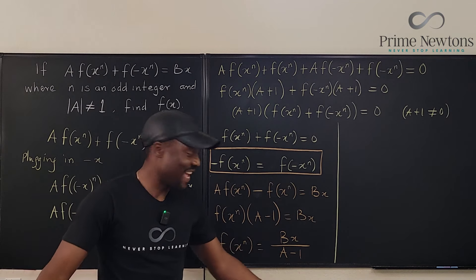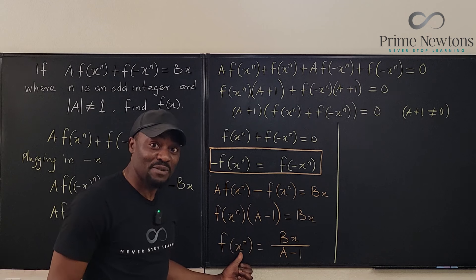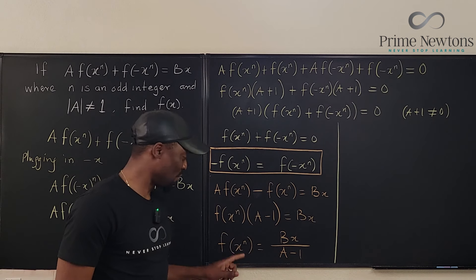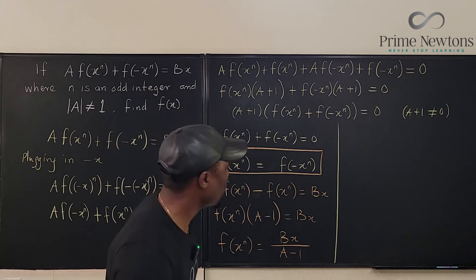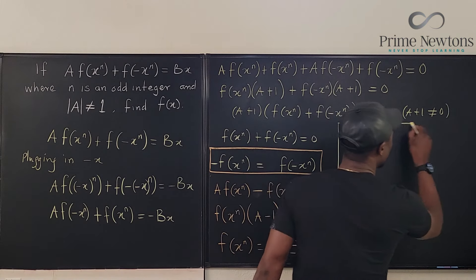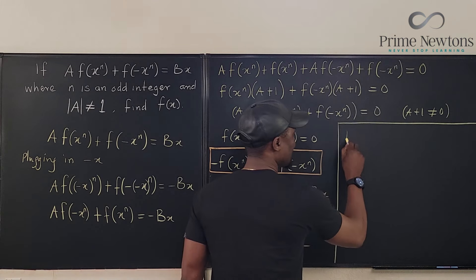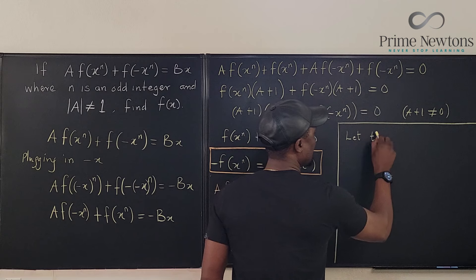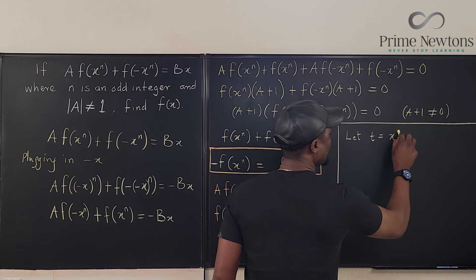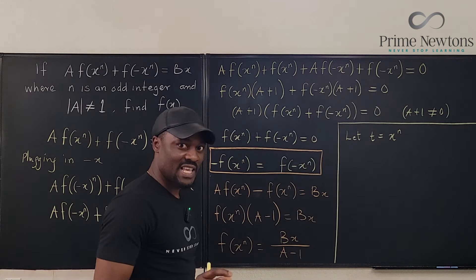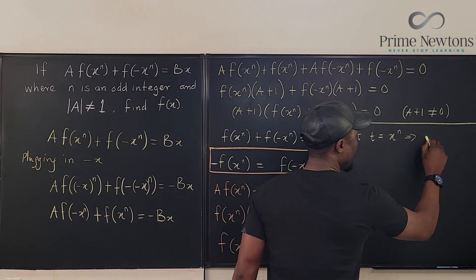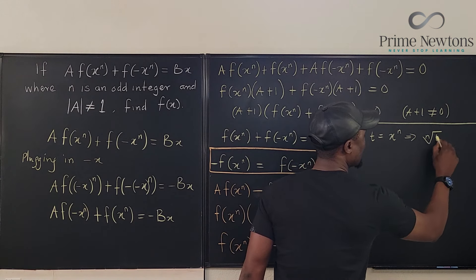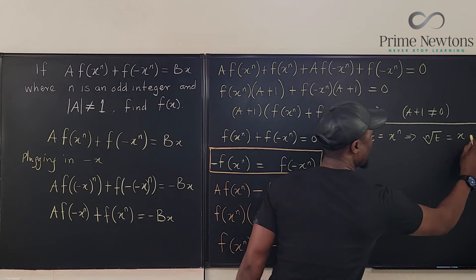Okay, so what do we need to do next? We're looking for f(x), not f(x)^n, so we need to do a substitution. I'll do a t substitution. So here I'll say let t be equal to x^n. So if I want to get x, I need to find x. It means that the nth root of t is equal to x.